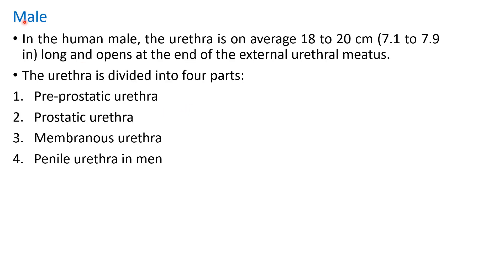First, about the male urethra. It averages 18–20 cm in length in males, and it opens at the end of the external urethral meatus. The male urethra is divided into 4 parts: pre-prostatic, prostatic, membranous, and penile.